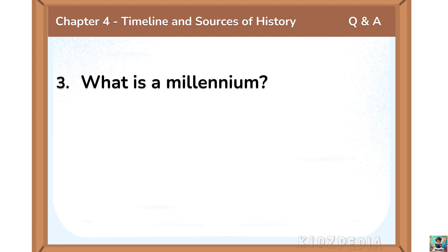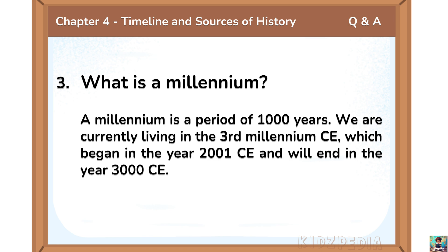What is a millennium? A millennium is a period of 1000 years. We are currently living in the 3rd millennium CE, which began in the year 2001 CE and will end in the year 3000 CE.